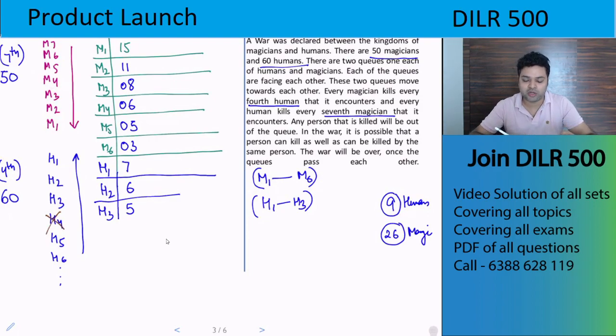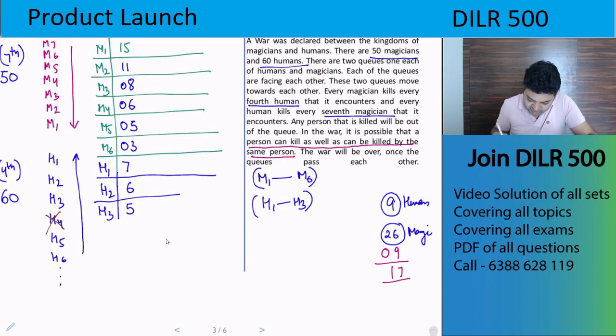It is possible that a person can kill as well as can be killed by the same person. Meaning human or magician, whoever meets each other, both will kill each other. So now these 9 humans, this means 9 magicians will be killed. How many magicians will be saved? 26 minus 9, 7 and 1, so 17 magicians will be saved with us. So out of 50, 17 are saved. 50 minus 17 is 33 killed. Similarly for humans, if I look, there were 60, 3 humans are saved with us who had crossed, all the rest will be killed. So 57 killed, these saved, and this is total.